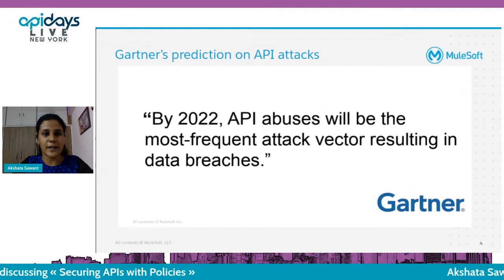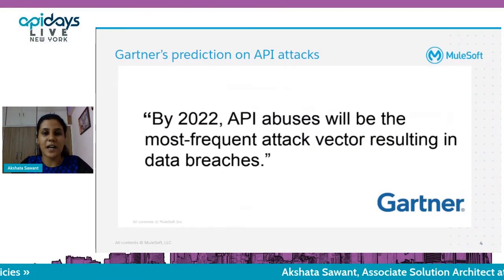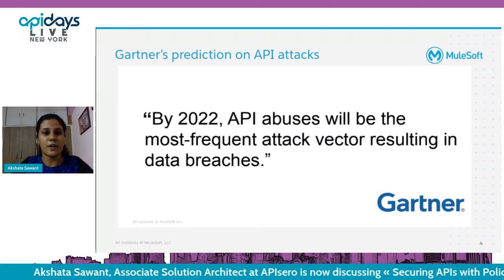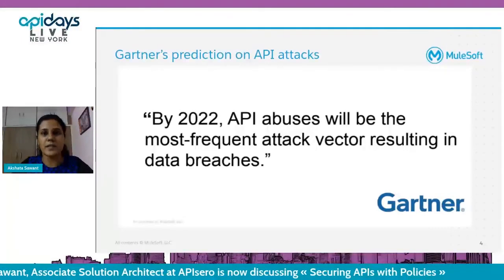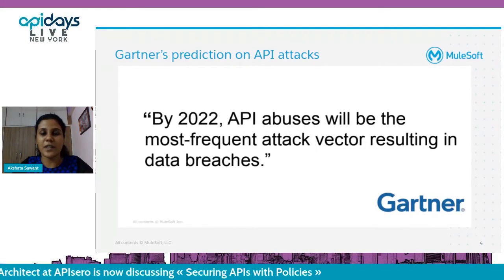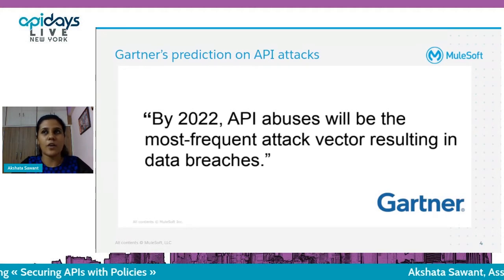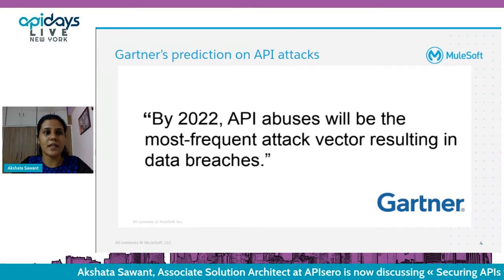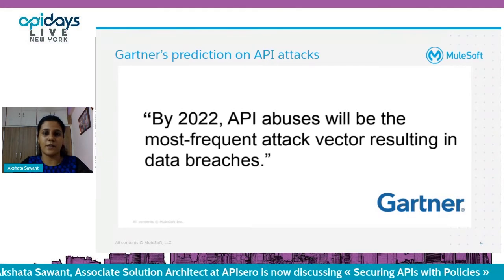As per Gartner's prediction, by 2022, API abuses will be the most frequent attack we'll see. This is the need of the hour — we need to think in detail about API security. Not just developers or architects, but everyone, including stakeholders, should be aware about API security and must think seriously about securing APIs.